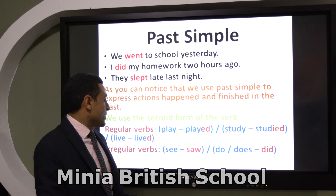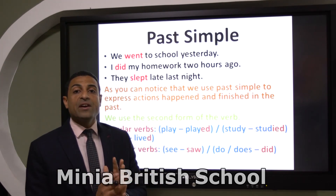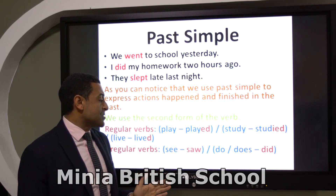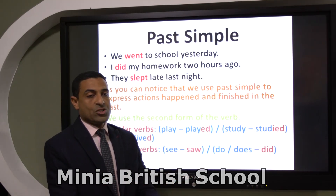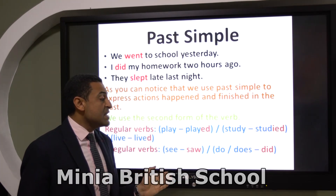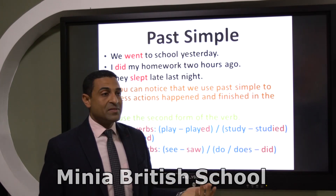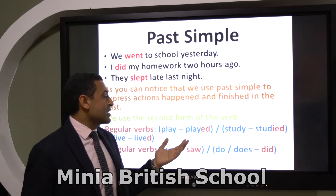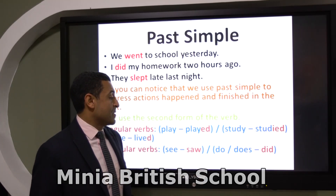The second kind of verbs we have is irregular verbs. For irregular verbs, we completely change the form of the verb — for example, 'see' becomes 'saw,' 'do' or 'does' becomes 'did.' There are many other irregular verbs; we will just use these as examples.